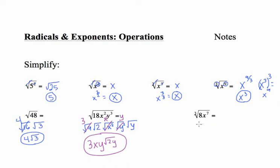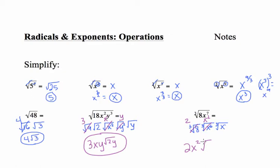For the third root of 8x to the seventh, I'll split this up. The third root of 8 simplifies nicely, so I take that apart. Then I split out the third root of x to the sixth, leaving the third root of x — since x⁶ times x equals x⁷. The third root of x⁶ is x squared, and the third root of 8 is 2. So the answer is 2x² times the cube root of x.